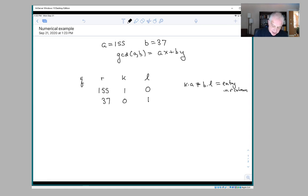So you can check that here. K is 1, so sure enough 1 times 155 plus 0 times 37 is 155, and 0 times 155 plus 1 times 37 is 37.